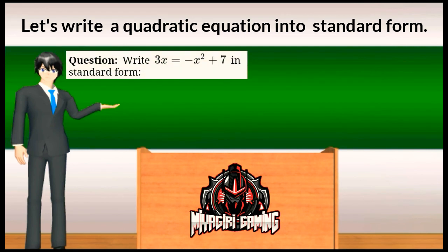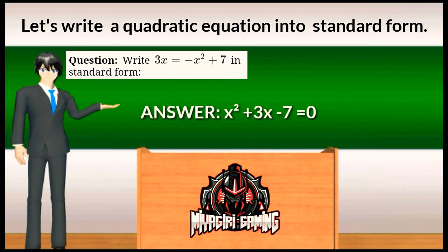Question number 2: write 3x equals negative x squared plus 7 into standard form. Let's transfer the given numbers to get a and c. The standard form of question number 2 is x squared plus 3x minus 7 is equal to 0.